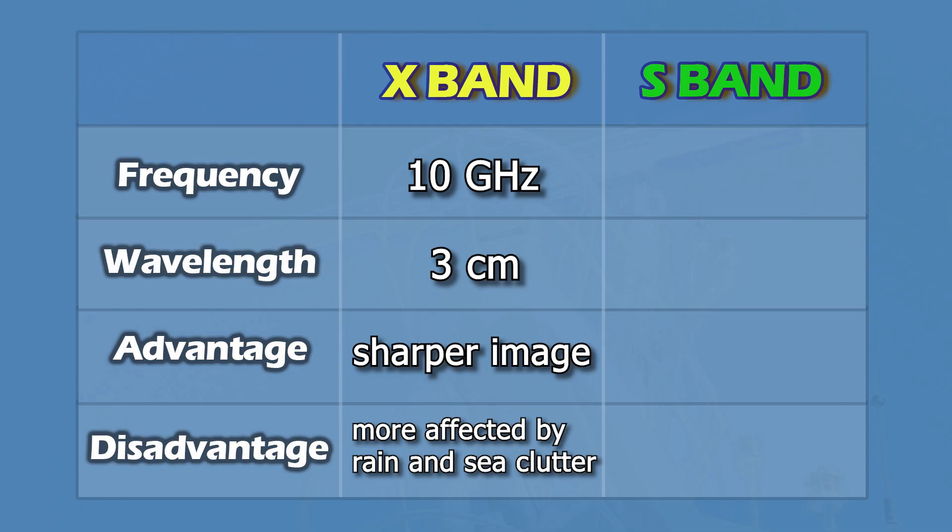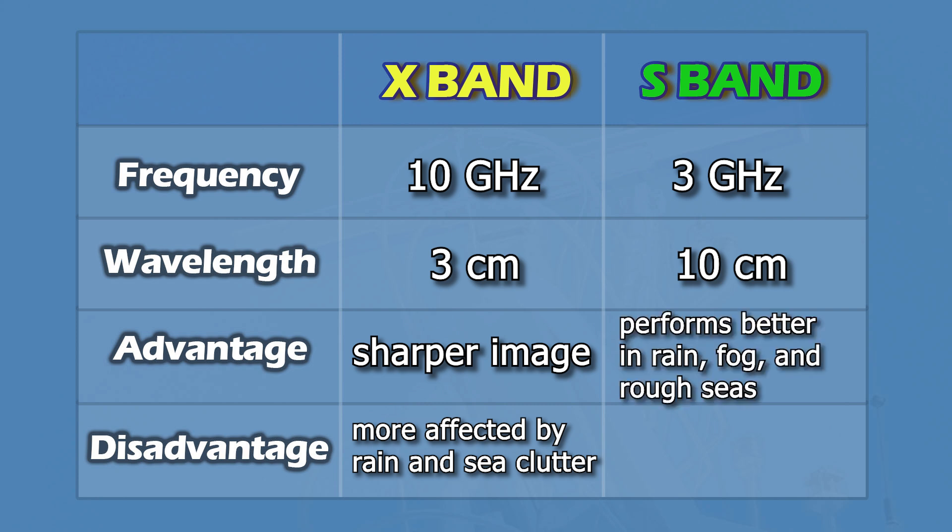S-band radar, on the other hand, runs at 3 GHz with a 10cm wavelength. It's great for long-range detection and performs better in rain, fog and rough seas. But the image is less detailed and it requires a larger antenna.